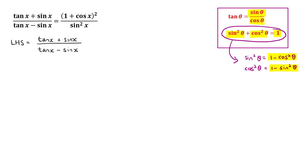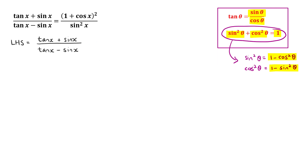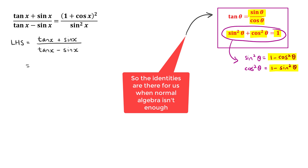Starting with the left-hand side, we count terms: two in the numerator and two in the denominator. Before moving forward, we need to perform factorization or fraction work to reduce the number of terms so we can cancel things out. Normal algebra can't help directly here, so we turn to our identities — since we have two tan terms and none on the right-hand side, we change those tans to sin over cos.